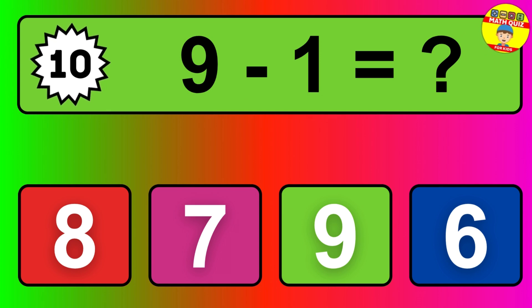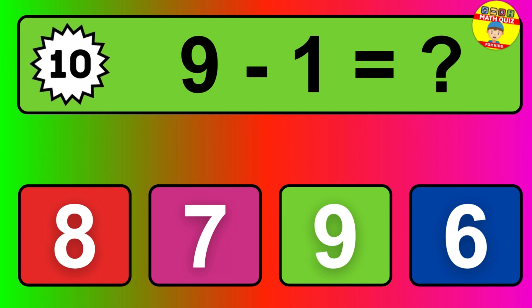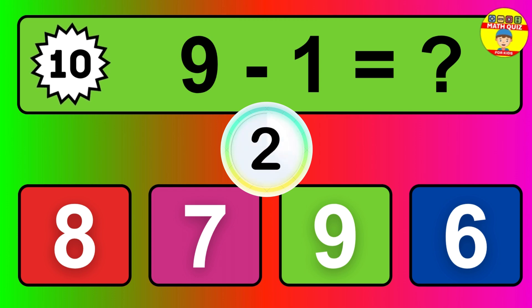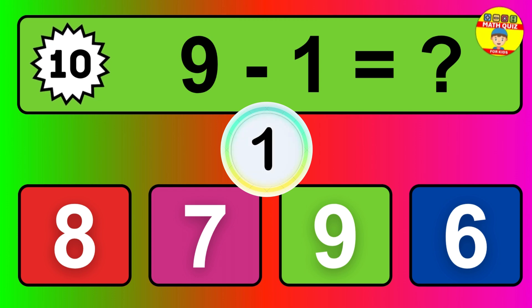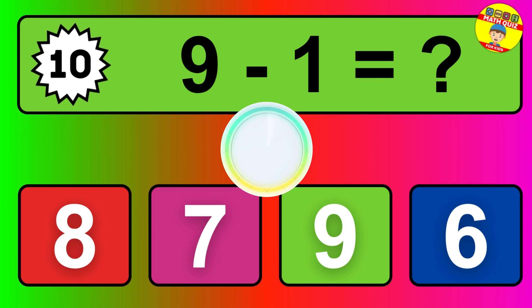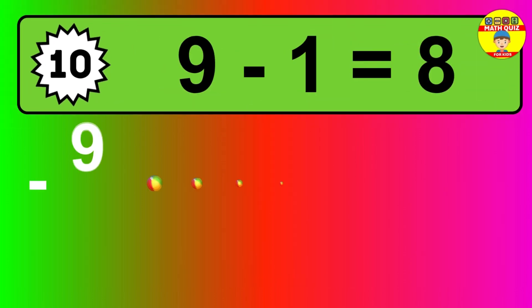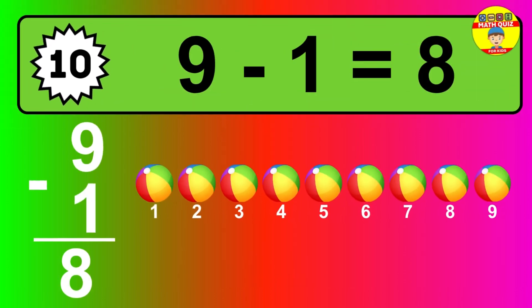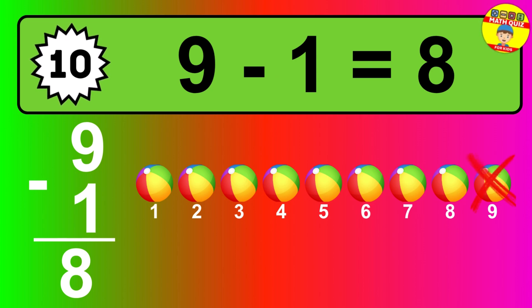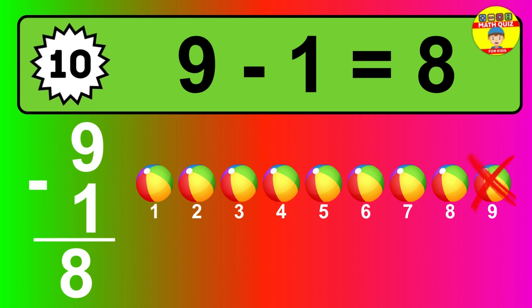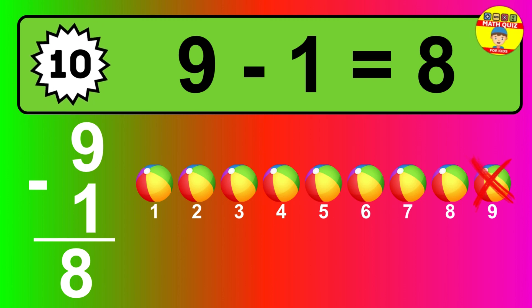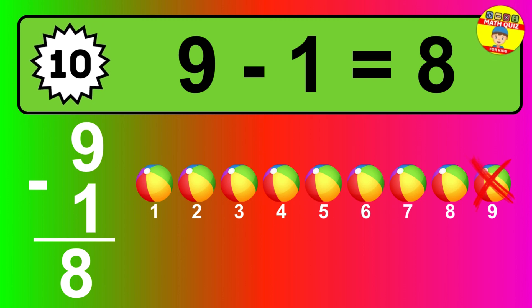Question 10. 9 minus 1 equals what? So the answer is 9 minus 1 is 8. Let's count it: 1, 2, 3, 4, 5, 6, 7, 8.